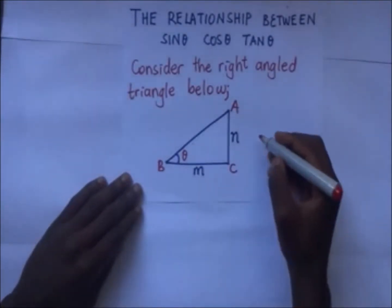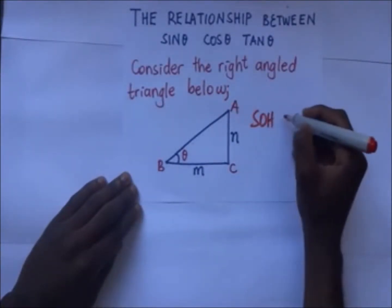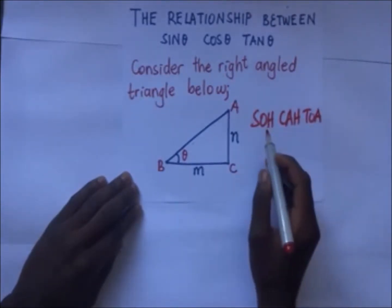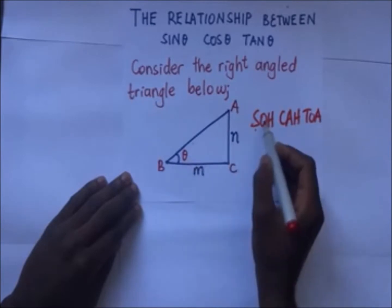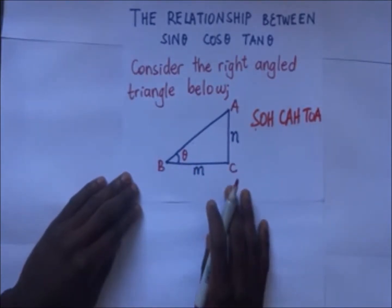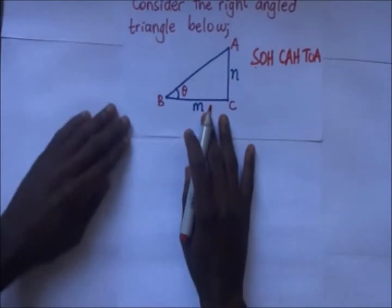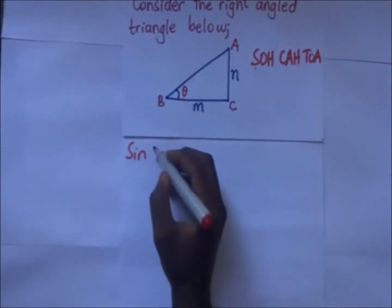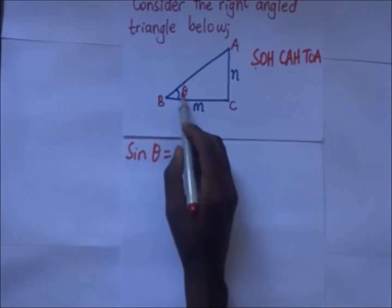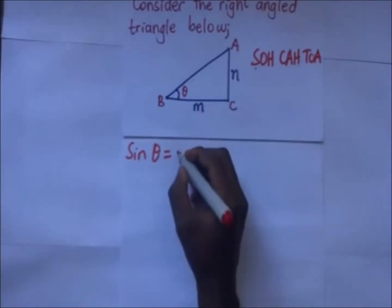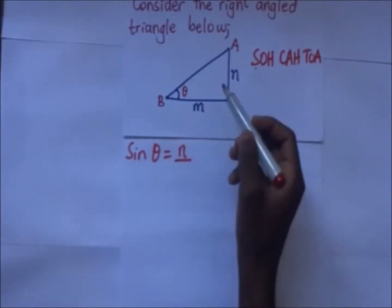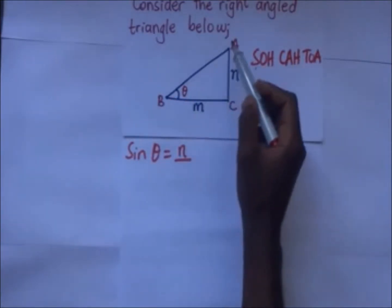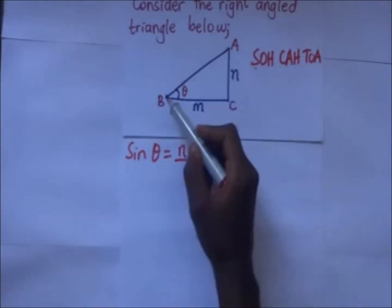Let's try and find the sine, cos, and tan of that angle theta. Remember we shall use our acronym SOHCAHTOA, meaning the sine of theta is equal to opposite over hypotenuse. So the sine of this angle theta is going to be the opposite, which is N, over the hypotenuse. Now we do not know the hypotenuse yet.